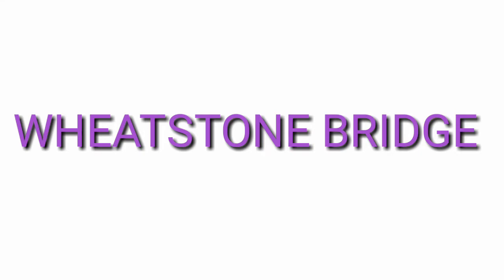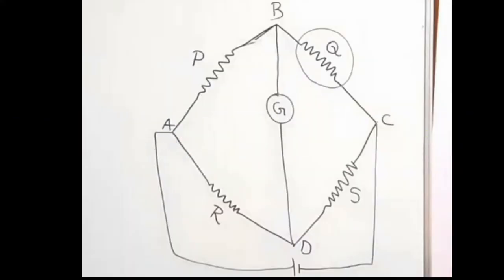What we are discussing is the Wheatstone Bridge. The Wheatstone Bridge is an unknown resistance method. We have three known resistors and one unknown resistor. This is the unknown resistance method that we are discussing.